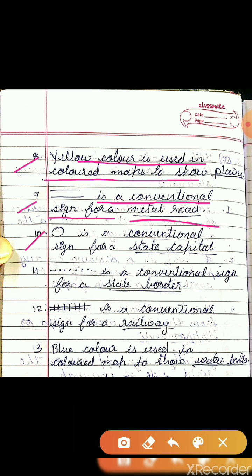Statement 10: Circle is a conventional sign for a blank. The answer is state capital.